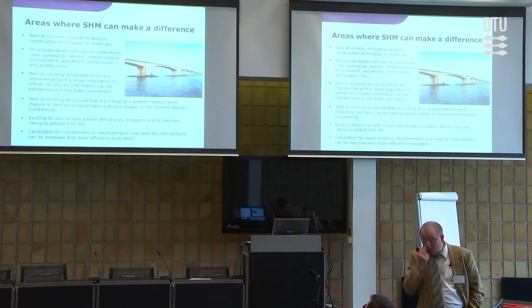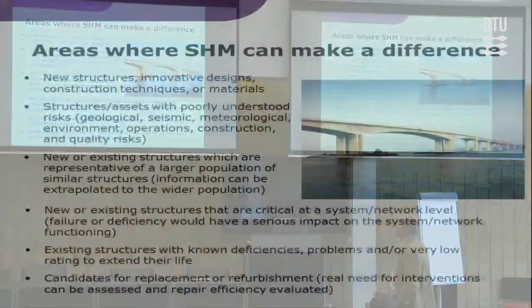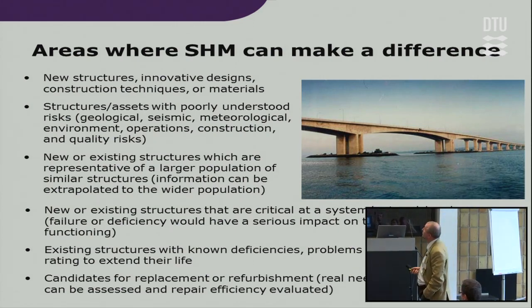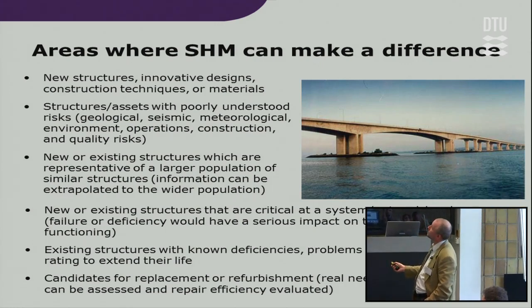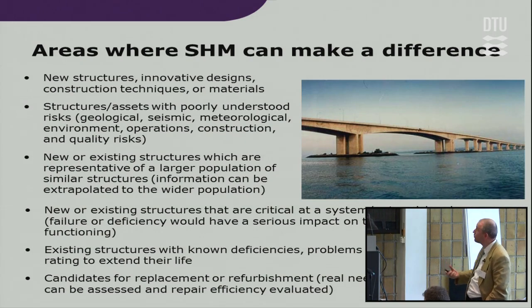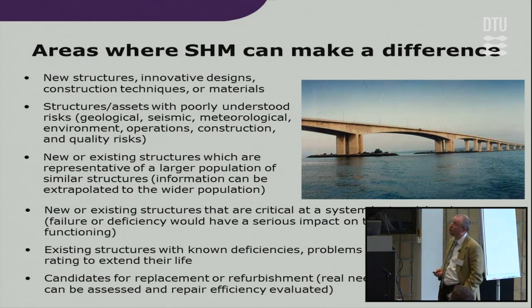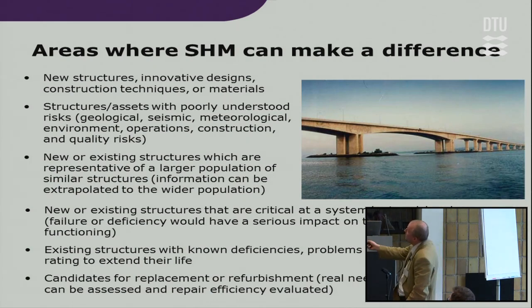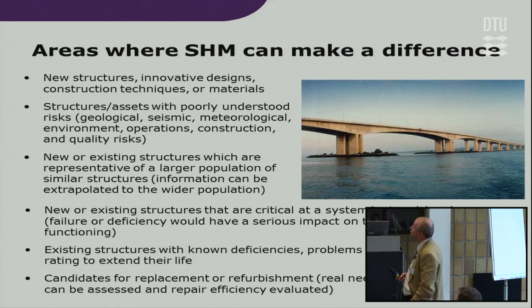A couple of slides summarize areas where SHM can make a difference. Typically for new structures with innovative design materials and construction techniques, where we don't have enough knowledge about how they function in a real environment. Structures with poorly understood risks — geological, seismic, meteorological, environmental. Also indicative structures representative of a larger population of similar structures, where information can hopefully be extrapolated to a wider population. That's more feasible for mechanical systems like wind turbines than for civil infrastructure like bridges, where each structure is quite unique.